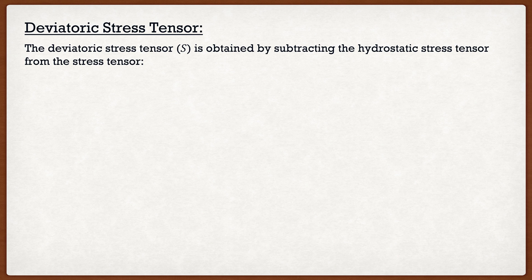The second one is the deviatoric stress tensor, and this one is simple but very, very useful. The deviatoric stress tensor S is obtained by subtracting the hydrostatic stress tensor from the Cauchy stress tensor. So when determining the deviatoric stress tensor, we already need to know our hydrostatic stress tensor. In formula form: S equals sigma minus pI, where pI is the hydrostatic stress tensor.